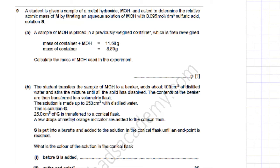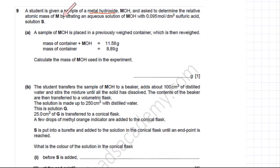This moles and titration question from O-Levels deals with finding unknown element M. A student is given a sample of a metal hydroxide MOH and is asked to determine the relative atomic mass of M by titrating an aqueous solution of MOH with 0.095 mol/dm³ of sulfuric acid, called Solution S.